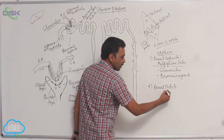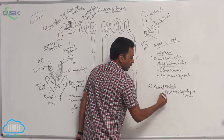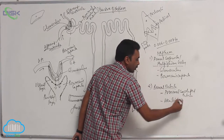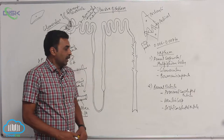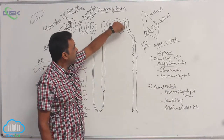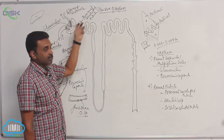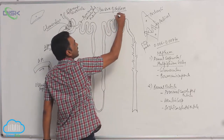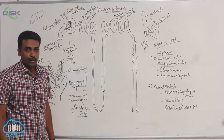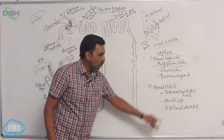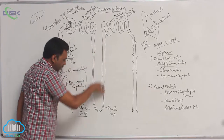The renal tubule includes three parts: the proximal convoluted tubule, followed by Henle's loop, followed by the distal convoluted tubule. 'Convoluted' means highly twisted or folded. The proximal convoluted tubule is closer to the Malpighian body, while the distal one is farther away. In between is a hairpin bend called Henle's loop, with a descending limb and an ascending limb.